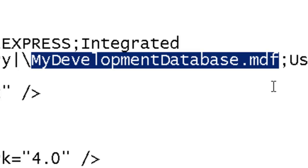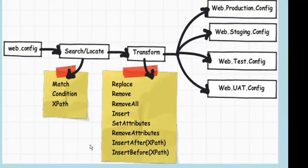By using the proper locator and proper transformation, you can manage your web.config files as per your environment and version. There are many other features and functions available in web.config transformation like Match, Condition, Replace, XPath, Remove, and Insert — but I have covered the basics here. Those functions work similarly to what I've demonstrated. If you have any doubts, you can mail at questpond@questpond.com.